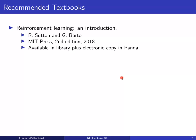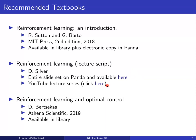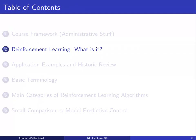This lecture is highly based on previous books and lecture slides. The most famous book is 'Reinforcement Learning: An Introduction' by Sutton and Barto, available in the 2018 edition in our library or as a PDF on Panda. We also relate to David Silver's reinforcement learning lecture, whose slides and YouTube series are available on Panda. Also recommended is Bertsekas' 'Reinforcement Learning and Optimal Control,' available in our library.